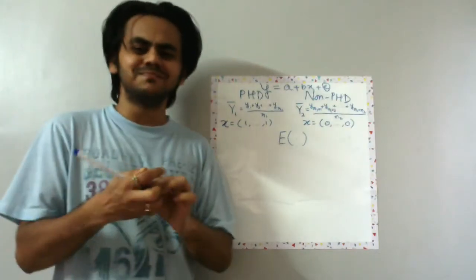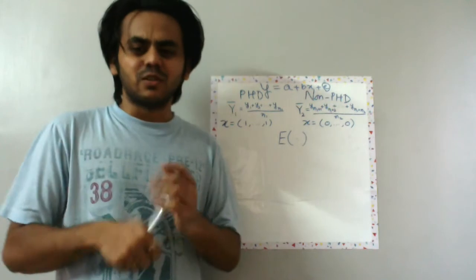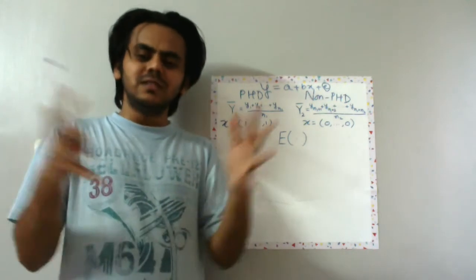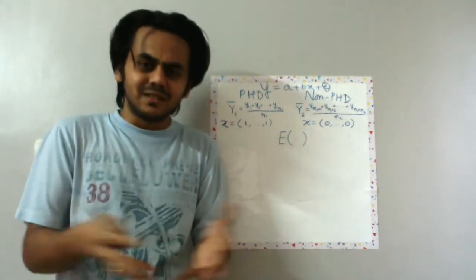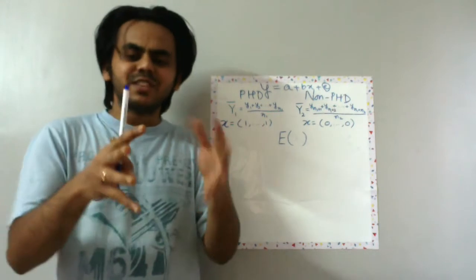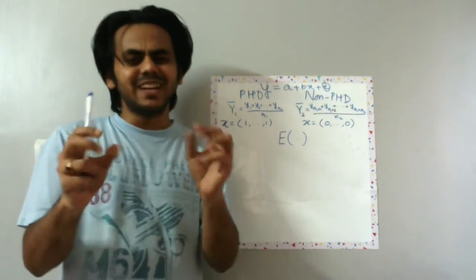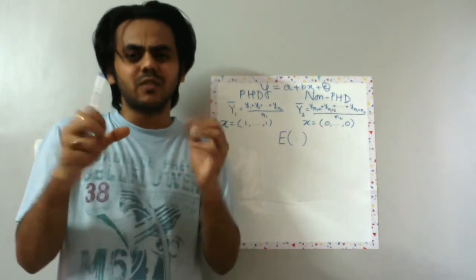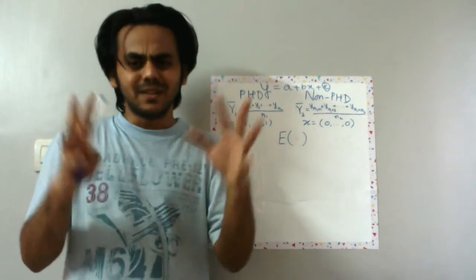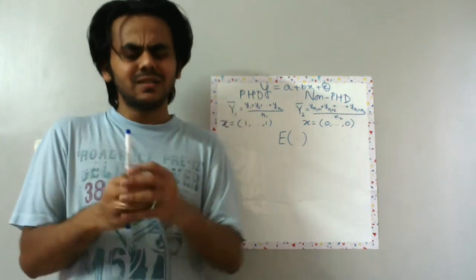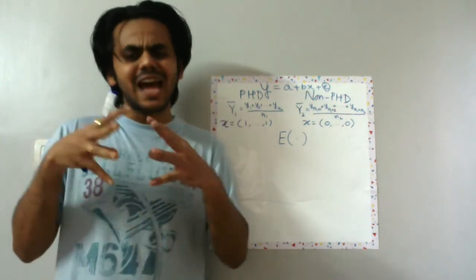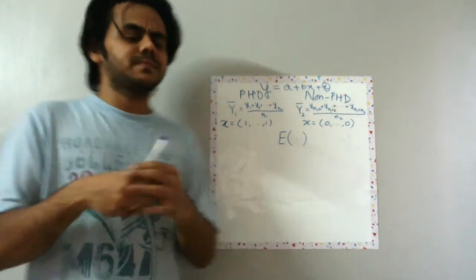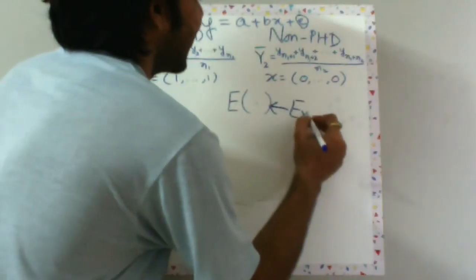Now let's understand a very simple operator. This is expectation operator, and if you operate this on anything, this gives you a kind of average. I mean what would be the value of this variable on an average basis? I'm telling it in a very rough kind of way, not mathematically exact way, but for the time being just take it as a kind of an average. So this is your expectation.